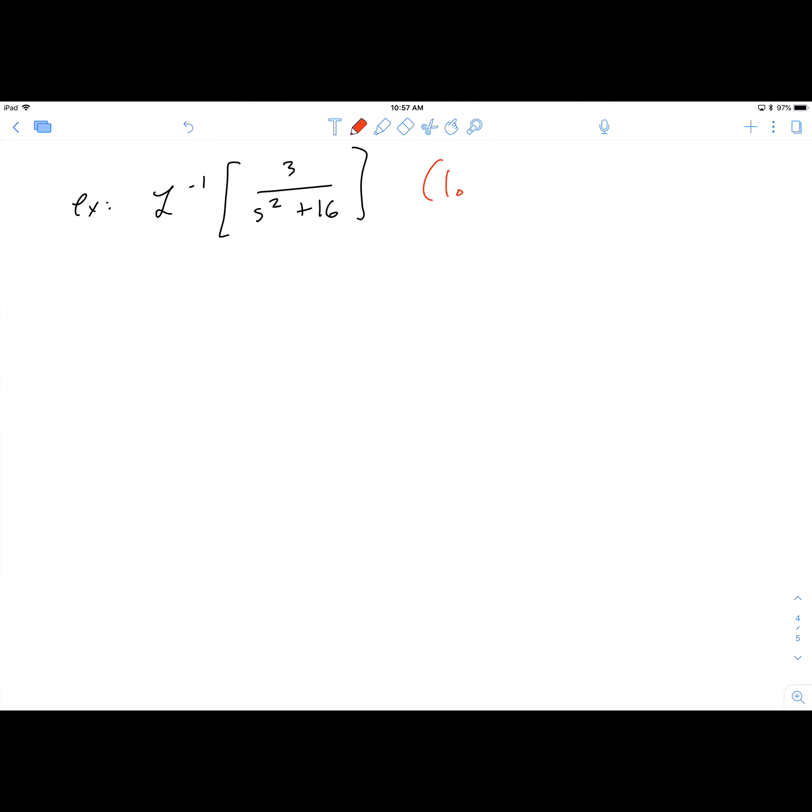You might notice, again, we're looking for the form of the s's, because we can't have any missing s's. If we have any missing constants, that's fine. We can deal with those. But the powers of s and so on need to be the same.